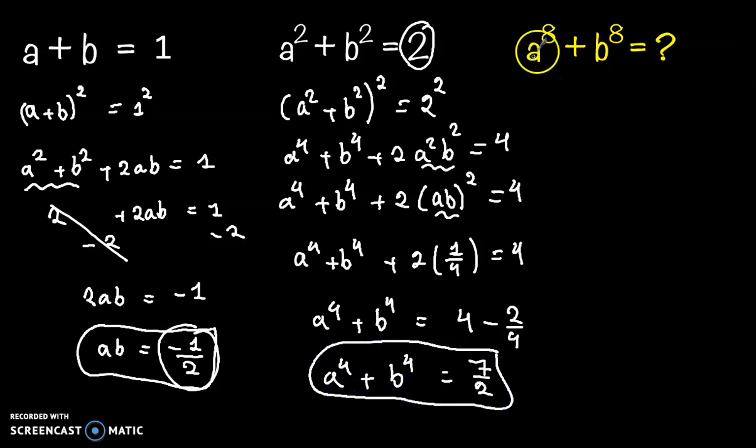And now to find a⁸ plus b⁸, we will square this equation. So (a⁴ + b⁴)² equals (7/2)².